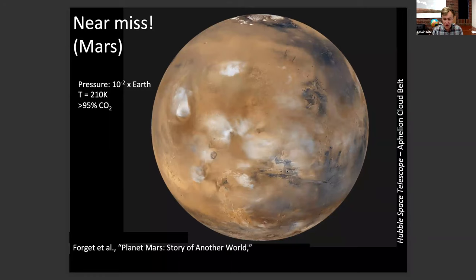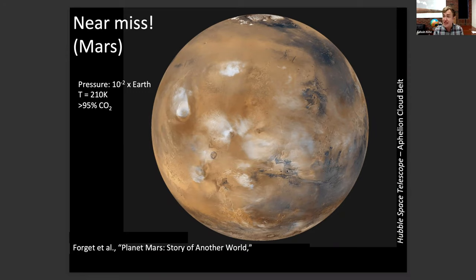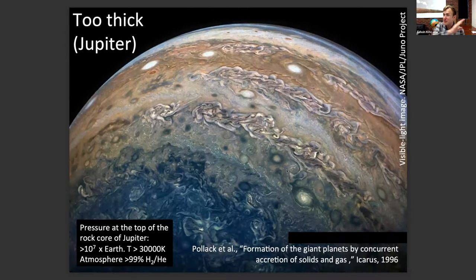Mars' atmosphere is right on the cusp of being too thin for liquid water — about six millibars of carbon dioxide. The triple point of water is six millibar pressure, below which liquid water is unstable to internal boiling. Mars today has no surface liquid water; the partial pressure of water vapor is far below six millibar. It's a really cold place, so any liquid water exposed to the surface will quickly evaporate and freeze. Very little greenhouse effect, only a few Kelvin from that thin CO2 atmosphere. Mars did have a thicker atmosphere in the past. At Jupiter, we have the opposite problem — there is no solid surface.